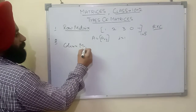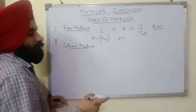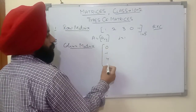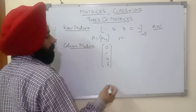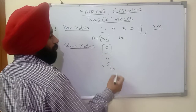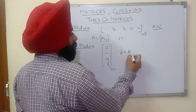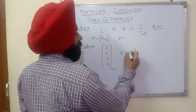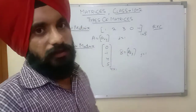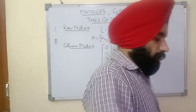The column matrix is a matrix in which there is a single column only. For example: [0, -1, 4, 5] — this is a column matrix with four rows and one column. If B is a column matrix, then j equals 1, meaning there will be only one column.